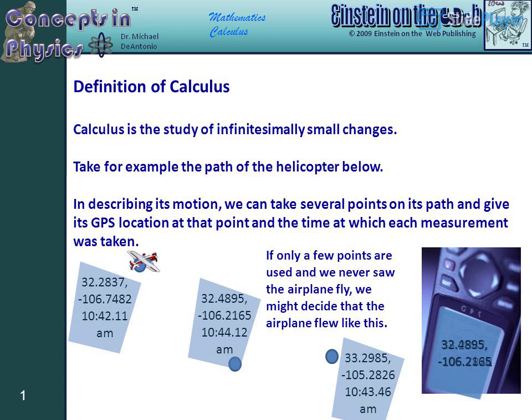If only a few points are used and we never saw the airplane fly, we might decide that the airplane flew like this. The coordinates shown are: 32.2837, -106.7482 at 10:42.11am; 32.4895, -106.2165 at 10:44.12am; and 33.2985, -105.2826 at 10:43.46am.